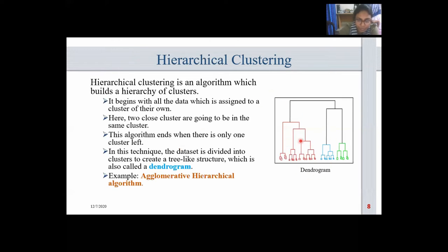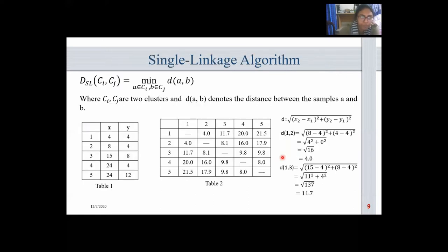This is the dendrogram. In the dendrogram clustering method, each level represents a possible cluster. The height of the dendrogram shows the level of similarity between two clusters. The most common example of hierarchical clustering is the agglomerative hierarchical algorithm.